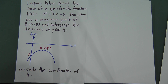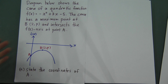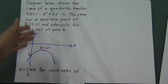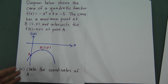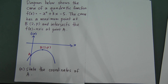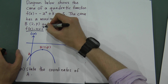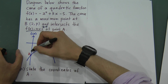For Part A, it's very easy. It asks you to state the coordinate of A. It says the curve intersects the f(x)-axis — this is like the y-axis but called f(x)-axis. On the f(x)-axis, x equals 0, so all coordinates there have x equal to 0.